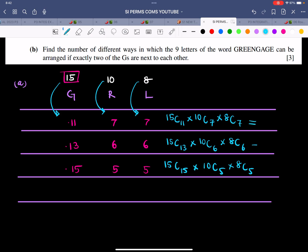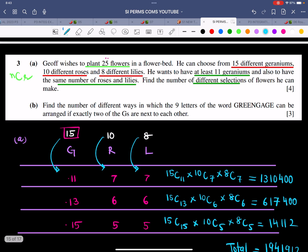Let's use a calculator at this stage. The first answer is 1310400. The next number is 617400. The last one is 14112. Therefore, the total of all this is 1941912. That is the answer for this part. So that's how the first part is done, which is about combination, selection. When you hear this word selection, you should know this is about NCR. Order does not make a difference.